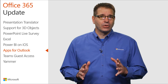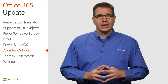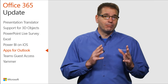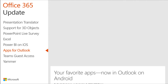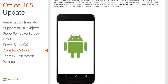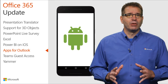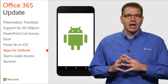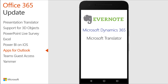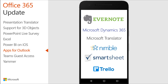Earlier this year, Microsoft launched add-ins for Outlook on iOS, enabling access to your favorite apps right in Outlook so you can get more done on the go. We are now rolling out add-ins to Outlook on Android customers with Outlook.com and Office 365 commercial email accounts. This launch will bring some of the most loved Outlook add-ins from iOS to Android, including Evernote, Microsoft Dynamics 365, Microsoft Translator, Nimble, Smartsheet, and Trello.